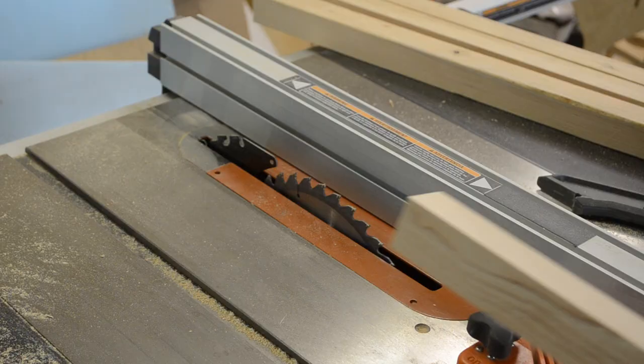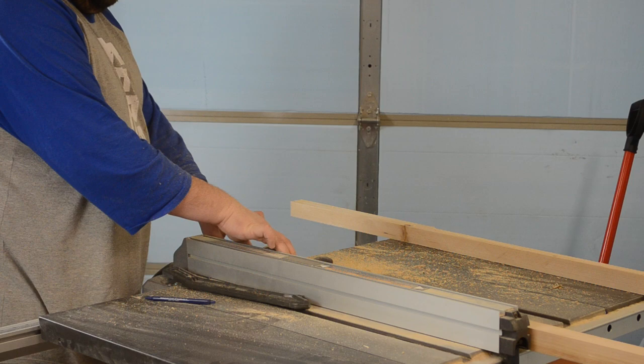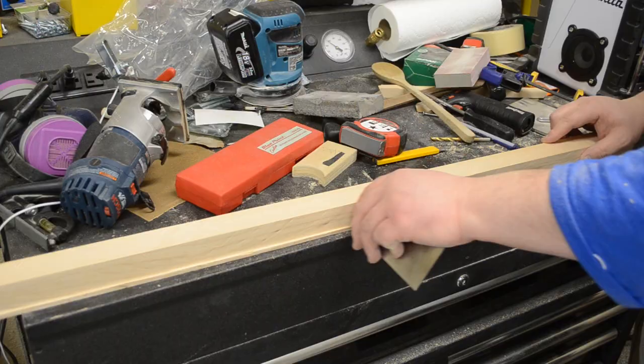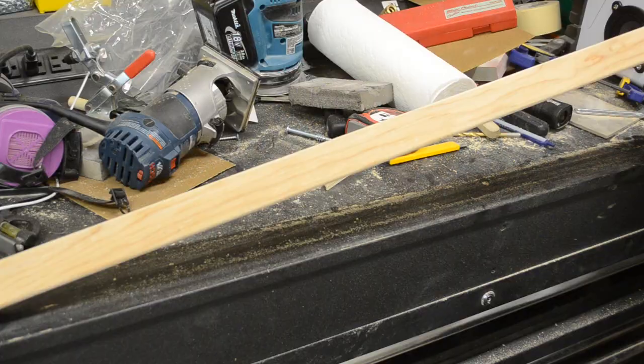I lowered my table saw blade slightly and moved my fence in so that the thickness of the blade was going to be taken away, leaving a very small lip or bead detail. Then using a ¼ inch round over bit in my trim router, I could knock off some of the major corners. After some hand sanding I ended up with a profile that looked like this.